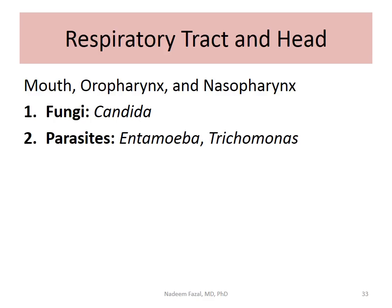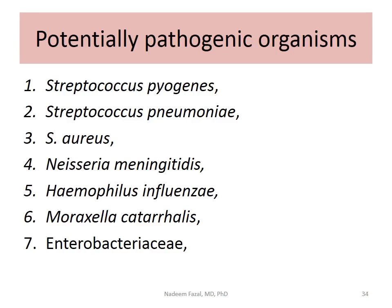There are fungi as well — Candida is very common in the mouth. There are parasites too: amoeba and Trichomonas are also present in the respiratory tract. I want you to know at least a couple of bacteria as the normal flora for each part of the body, then find out what pathogenic organisms cause disease. The question I'll ask you: which bacteria will always cause disease in the upper respiratory tract? The bacteria commonly causing upper and lower respiratory tract infections include Strep, Staph, Neisseria, Haemophilus, Moraxella, and Enterobacteriaceae — these are very common in clinical practice.